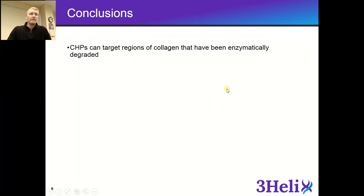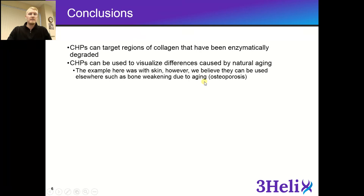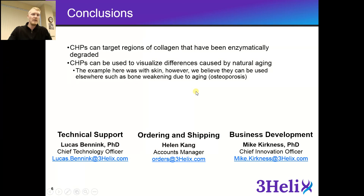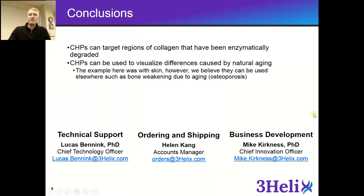In conclusion, we have shown that CHPs can target regions of collagen that have been enzymatically degraded, and CHPs can be used to visualize differences caused by natural aging in the skin model. We believe this can also be used elsewhere, such as bone weakening due to aging and osteoporosis. If you have any questions, my name is Luke Benek — feel free to contact me. To order any CHPs, you'll be in contact with Helen Kang. For new applications or new ideas, please contact our business development lead, Dr. Mike Kirkness.